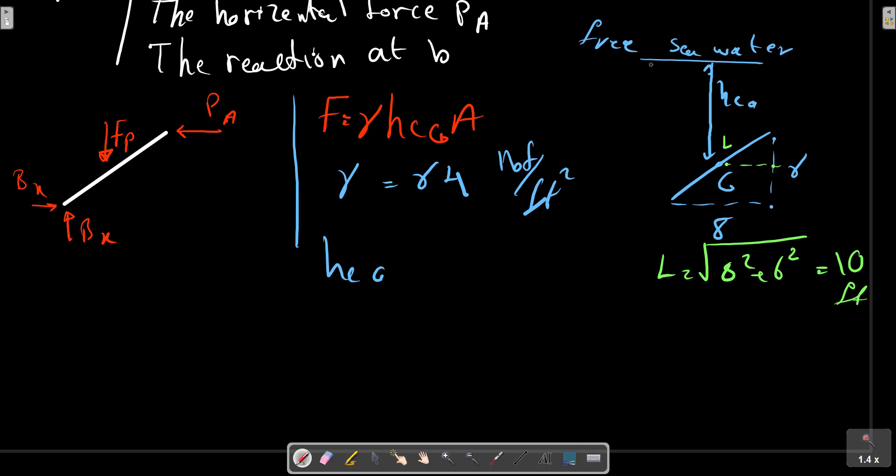So we know this distance also from the previous picture equals to 50 feet. So hcg equals to 50 minus 3, equals to 12 feet.